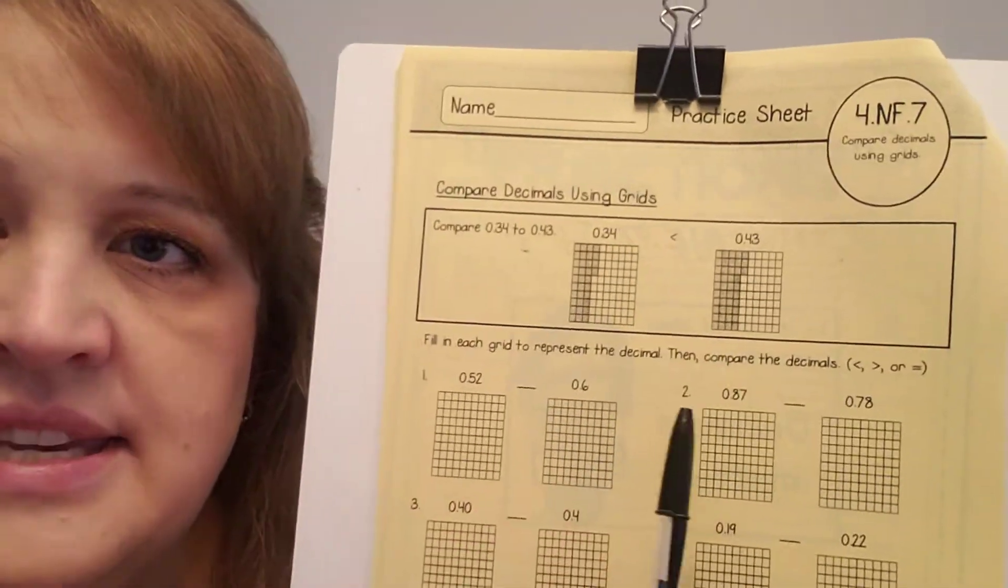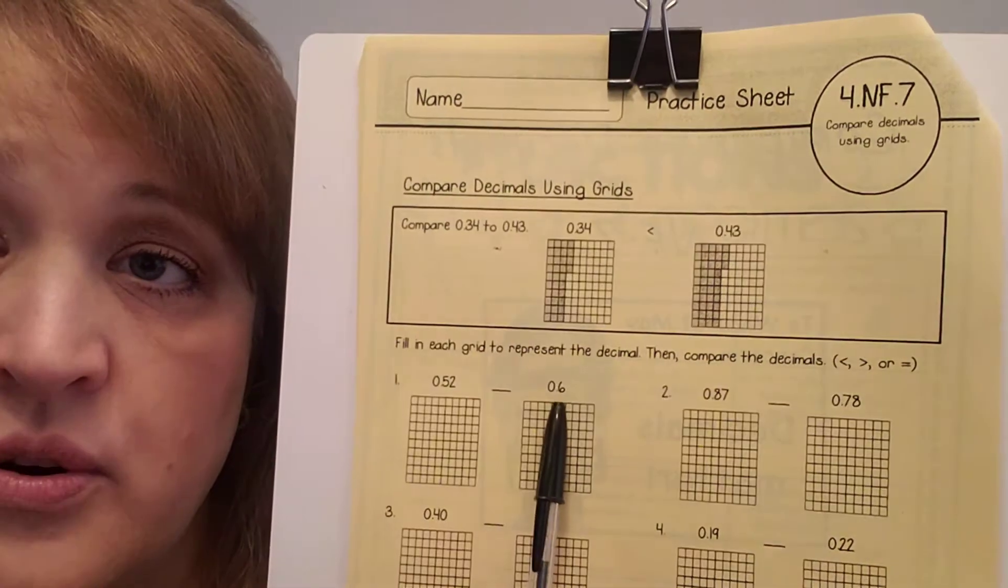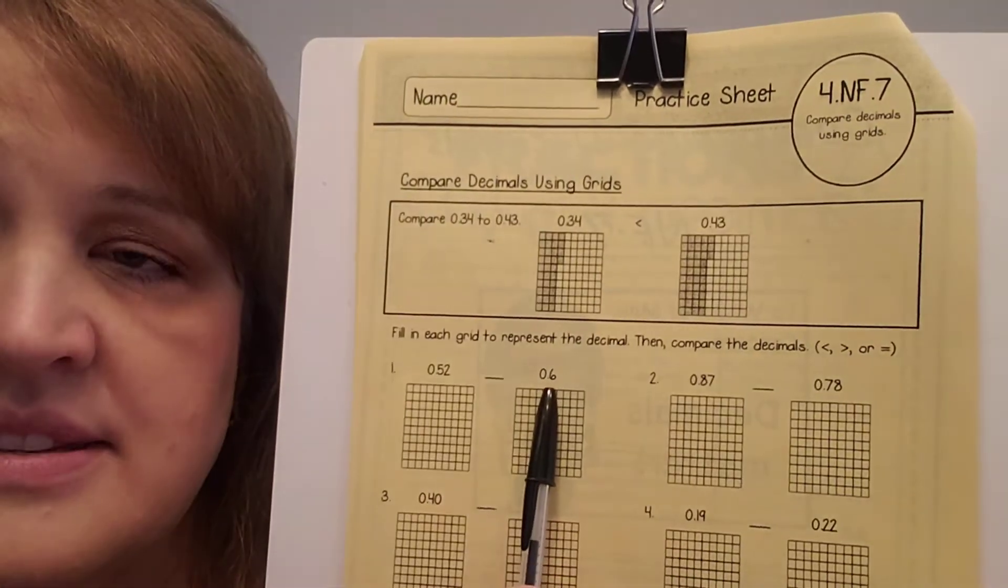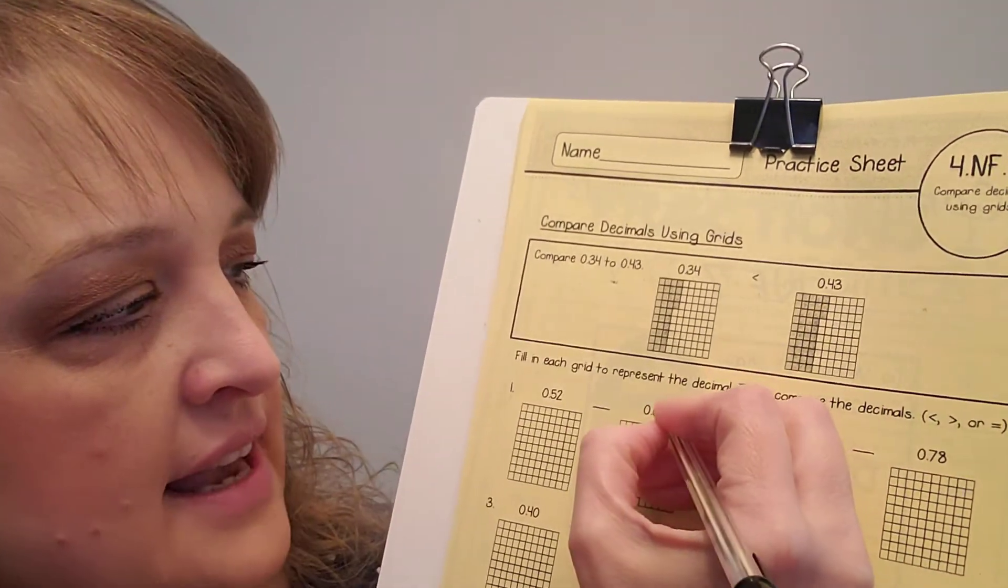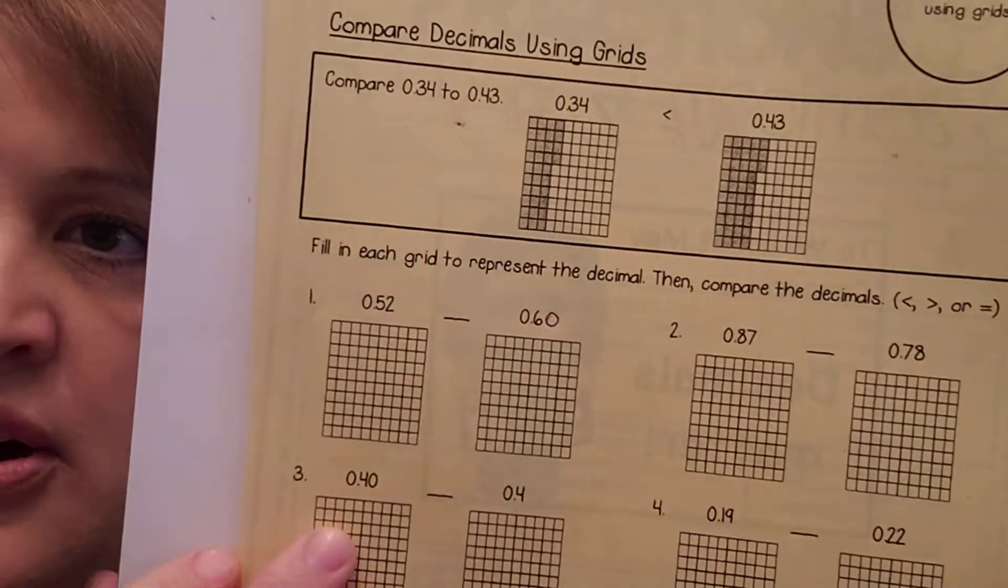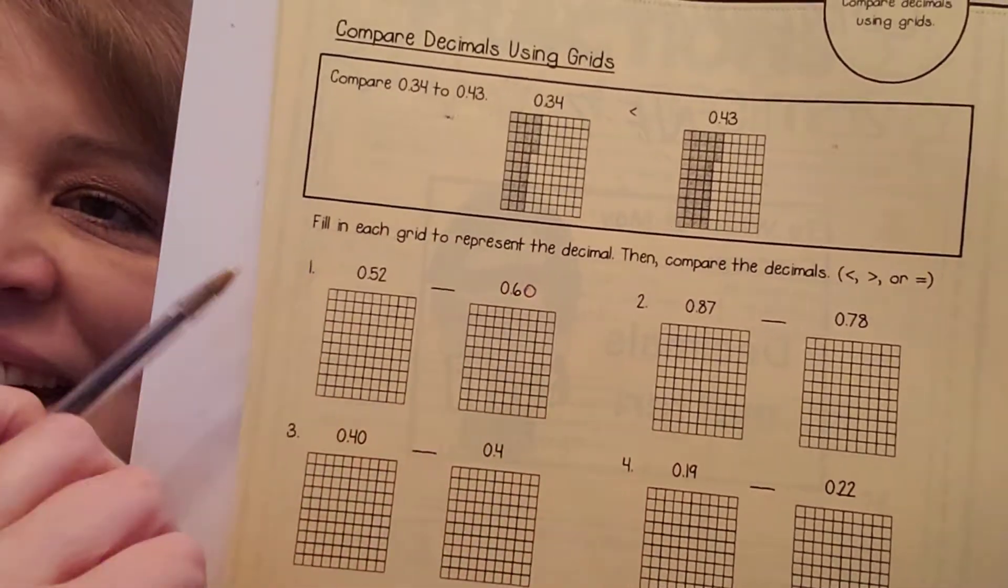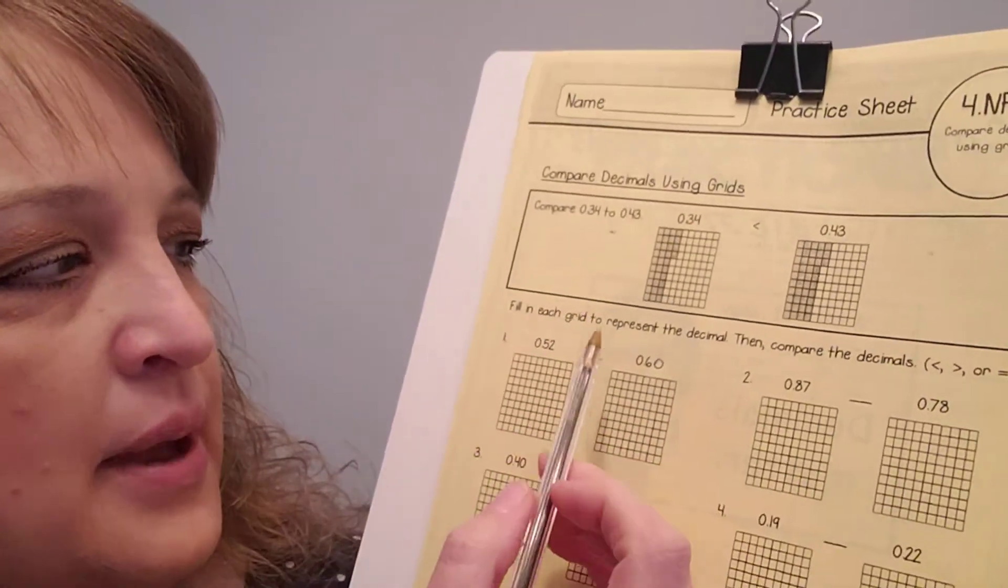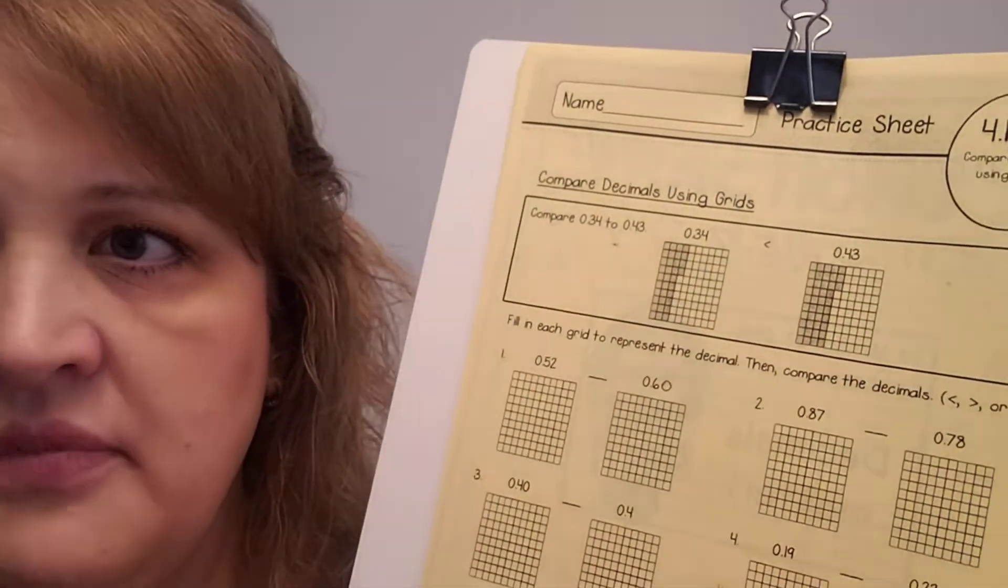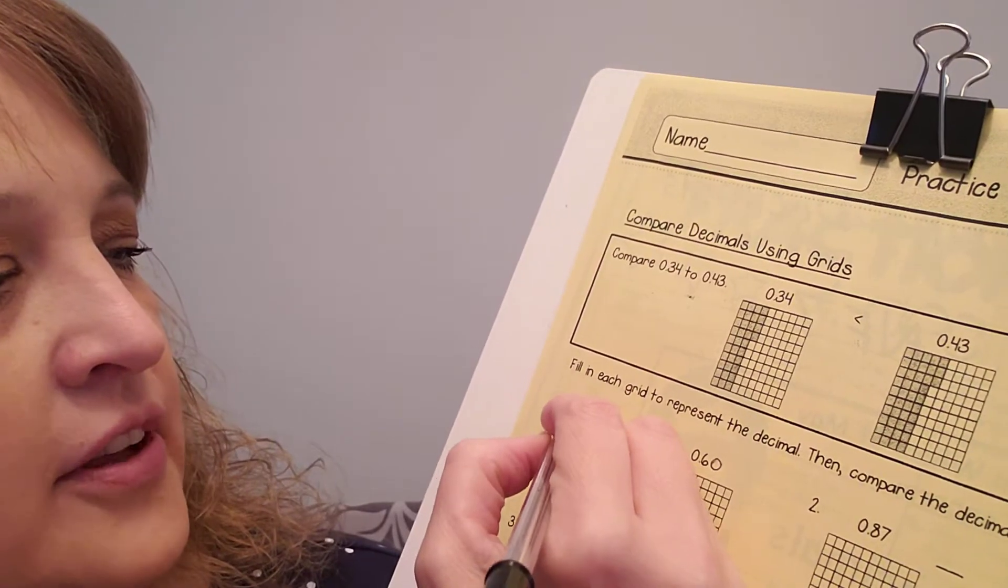So, this is the easiest way to do this. If you have a number that's in the hundredths place, and you're comparing it to a number that only goes to the tenths place, it's very simple because we know that six tenths is the same as sixty hundredths. So, do I have two decimal places? Yes. Do I have two decimal places? Yes. Now, it's very simple to compare. Which one is larger? Fifty-two cents or sixty cents? Well, that's easy. Sixty cents is larger. So, I'm going to put my greater than sign, and I'm going to fill this in.